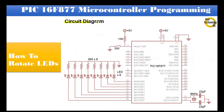Here is the circuit diagram we are using in our project. It is the PIC16F877 microcontroller. Pin number 1 is Master Reset. Port D is interfaced with LEDs and we are using the current sourcing mode of the LED, and the value of the resistor is 290 ohm. Pin numbers 13 and 14 are interfaced with an 8 MHz crystal and 22 pF capacitors are connected with the crystal. Pin numbers 11 and 32 are connected with positive 5 volts. Pin numbers 12 and 31 are connected with ground.